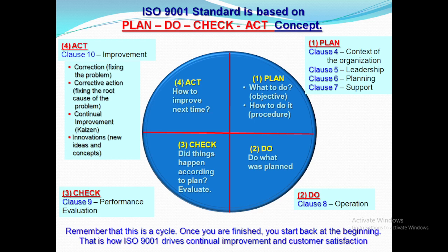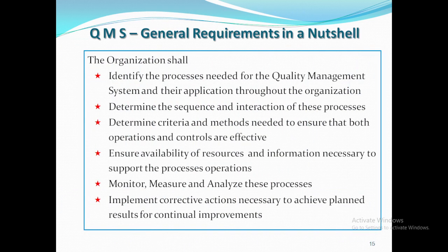This slide shows in a nutshell how the PDCA cycle matches with ISO main clauses 4 to 10. Remember that this is a cycle — once you have finished, you start back at the beginning. That is how ISO 9001 drives continual improvement in all processes and customer satisfaction. The organization shall identify the processes needed for the quality management system, determine their sequence and interaction, determine criteria and methods needed to ensure operations and controls are effective, ensure availability of resources, monitor, measure and analyze these processes, and implement actions to achieve planned results for continual improvements.